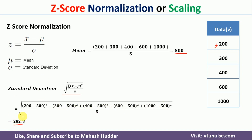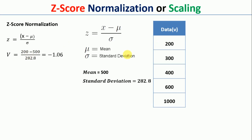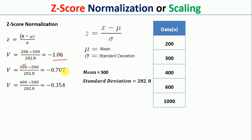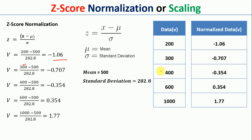Once you calculate the mean and standard deviation, you put those values into the equation to calculate the normalized values. In the first case, x = 200, so (200 - 500) / 282.8 gives a normalized value of -1.06. Similarly, the second normalized value with respect to 300 is -0.707, the third is -0.354, the fourth is 0.354, and the fifth is 1.77. These are the normalized values with respect to z-score normalization using mean and standard deviation.